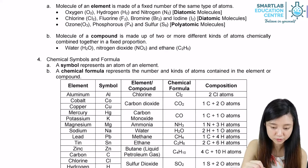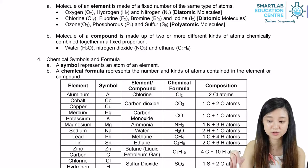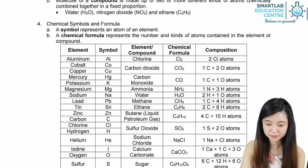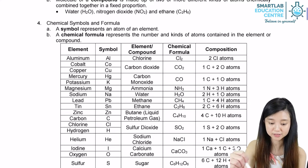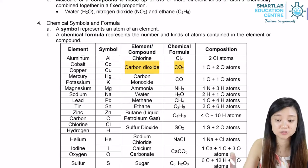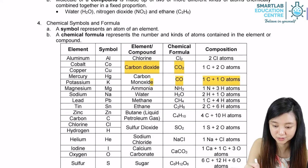A chemical formula represents the number and kind of atoms contained in an element or compound. Some examples we have to memorize by heart: carbon dioxide is CO2, and carbon monoxide is CO.